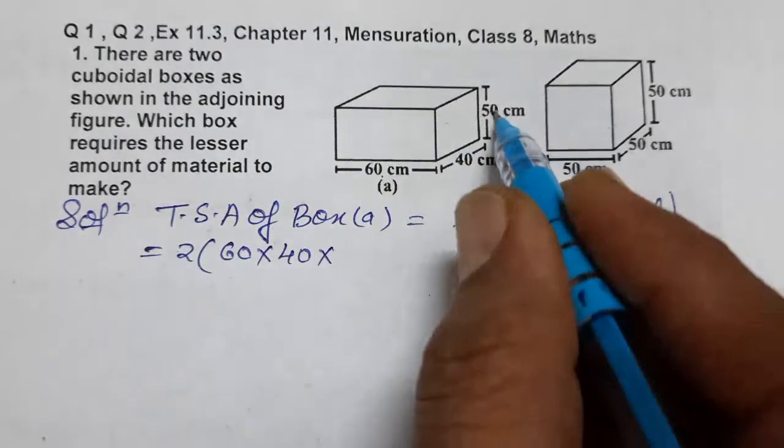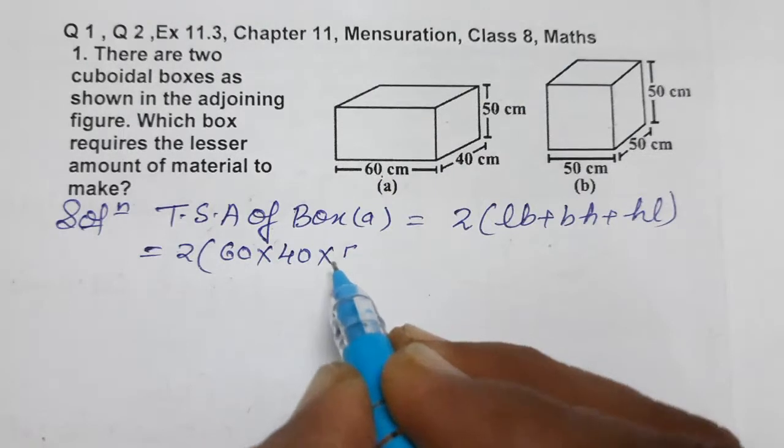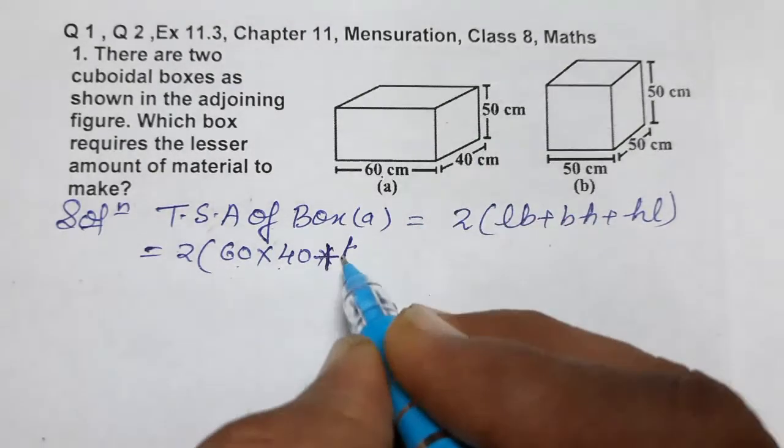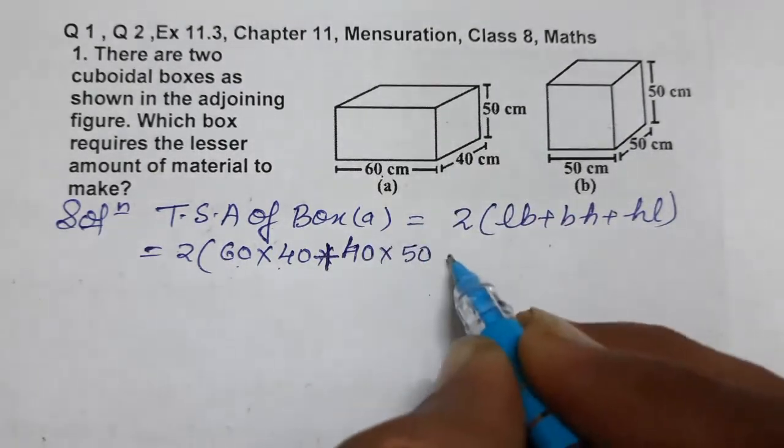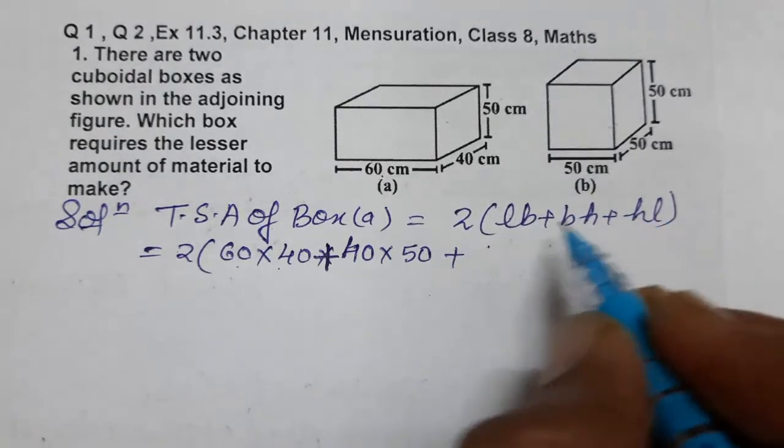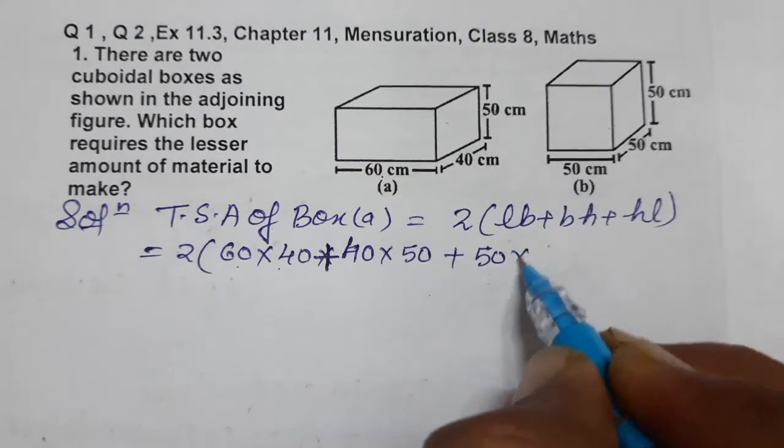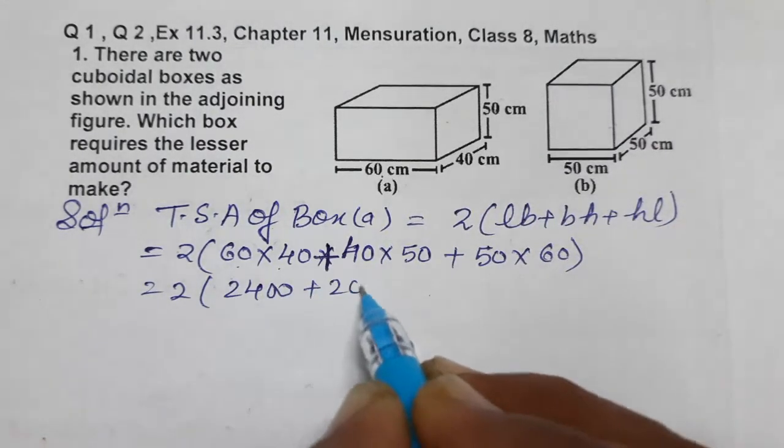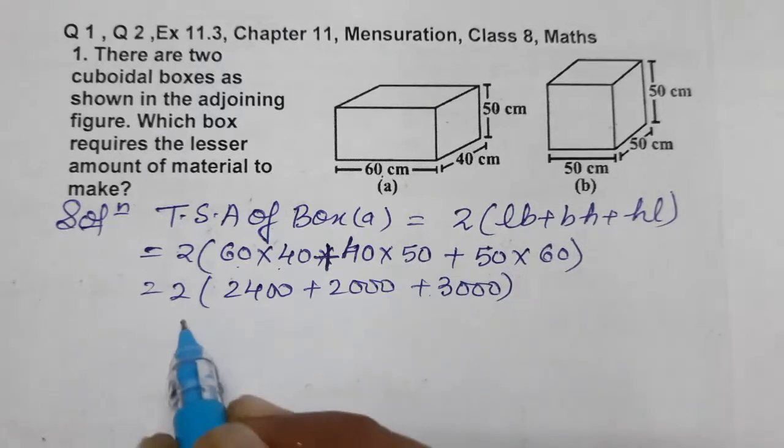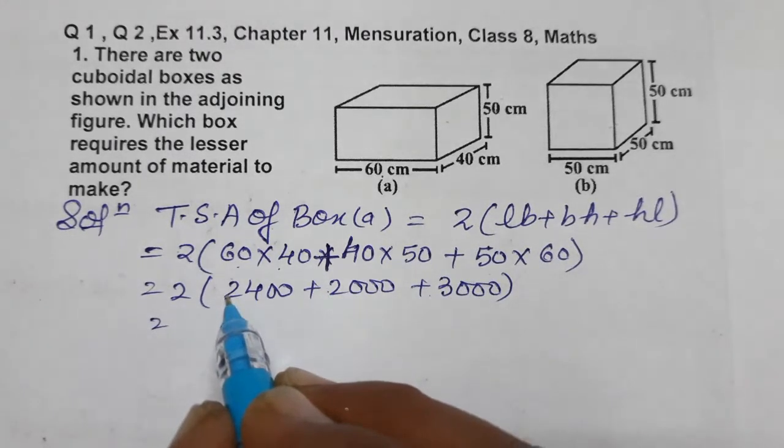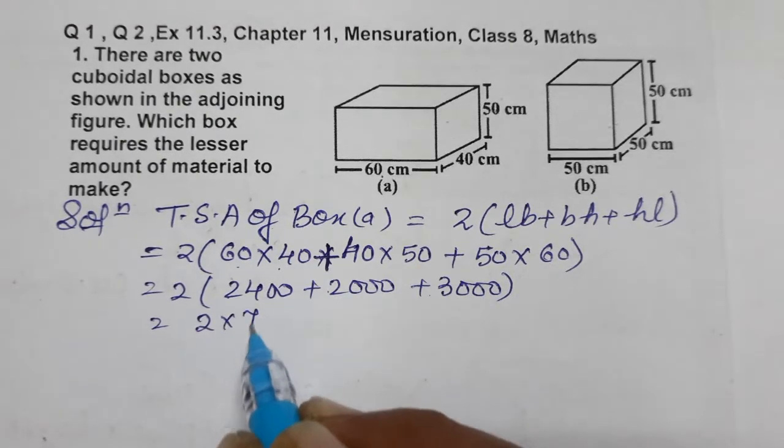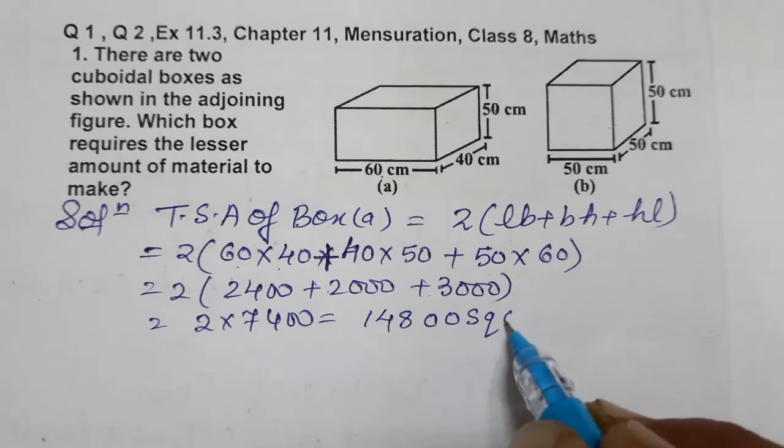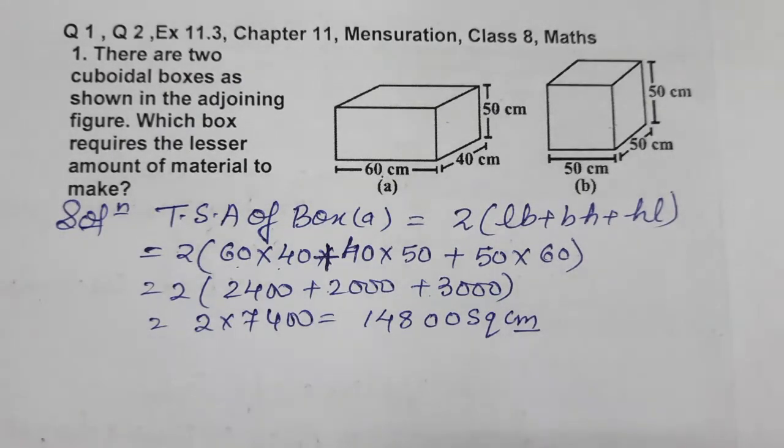So we have 2(60×40 + 40×50 + 50×60). Now multiply: 2400 plus 2000 plus 3000. Adding these: 3 plus 2 is 5, 5 plus 2 is 7, giving us 7400. So 2 into 7400 equals 14,800 square centimeters. This is the total surface area of Box A.